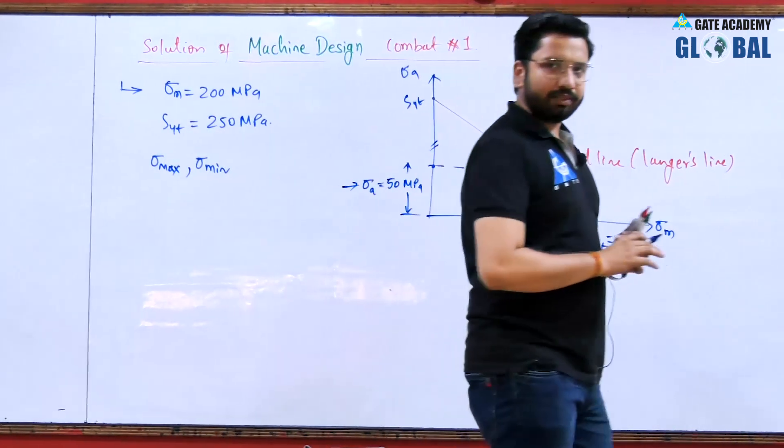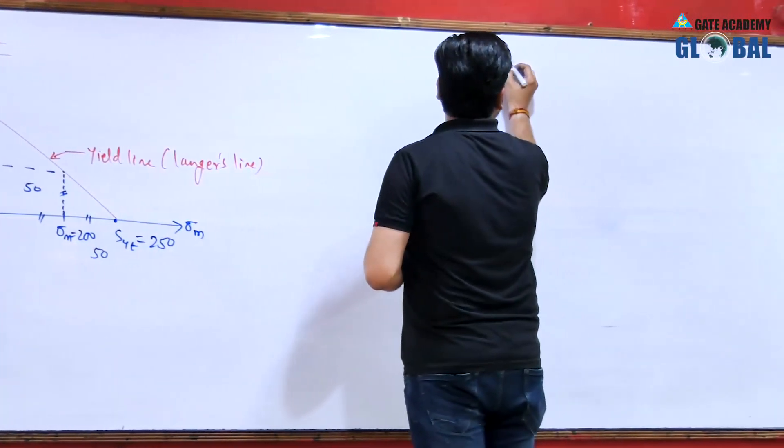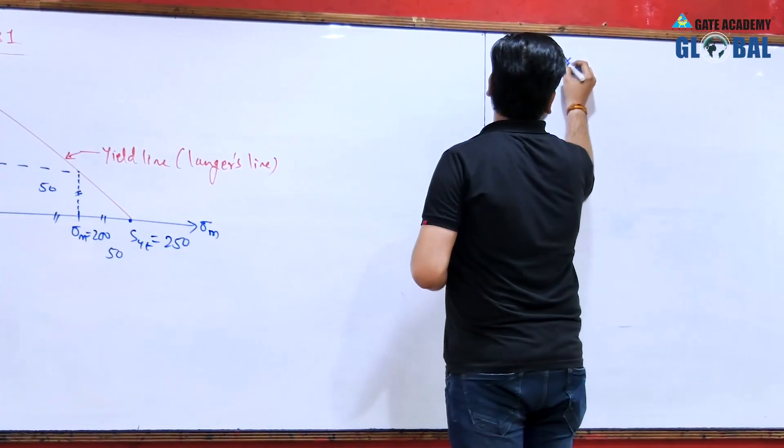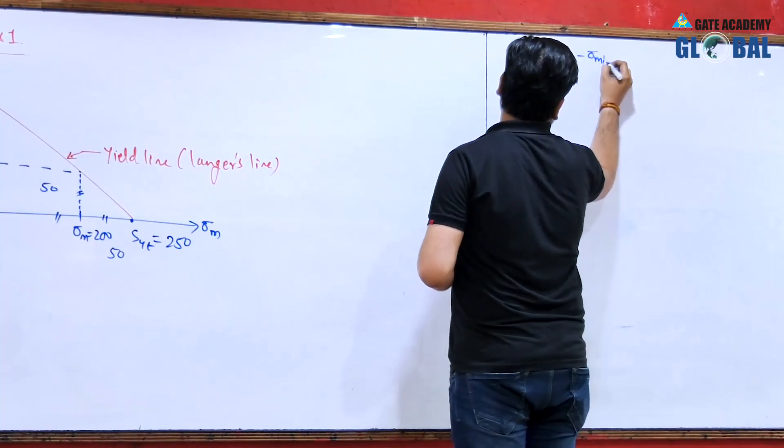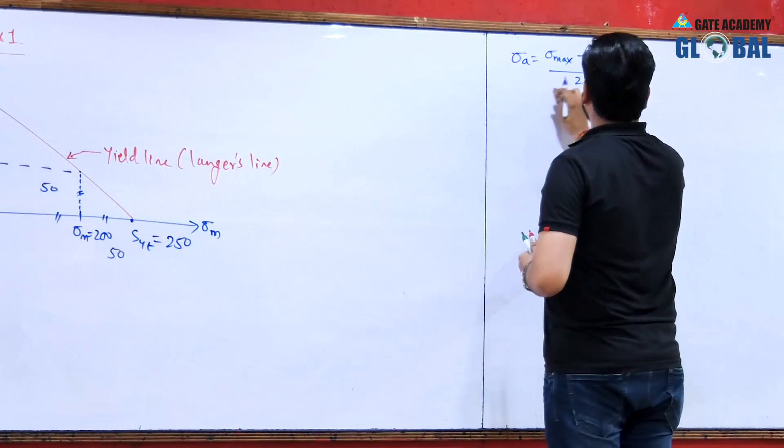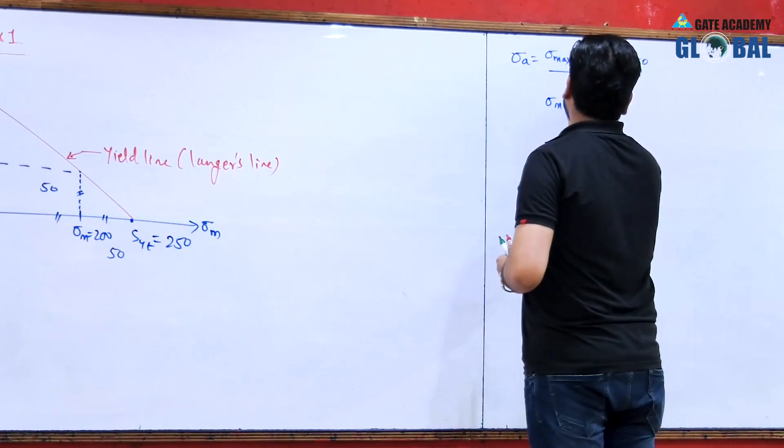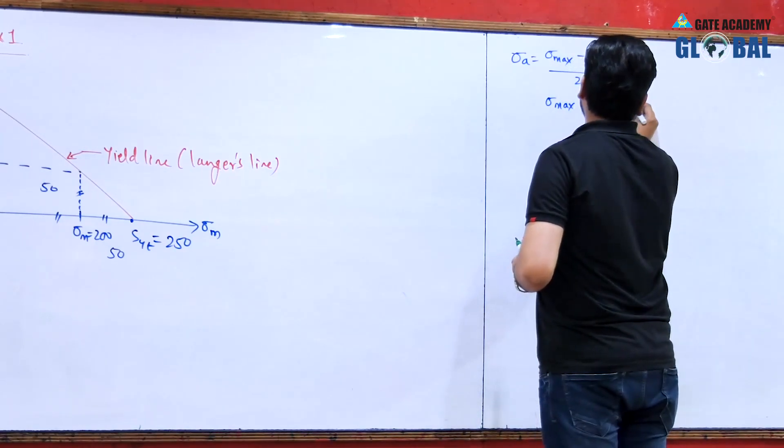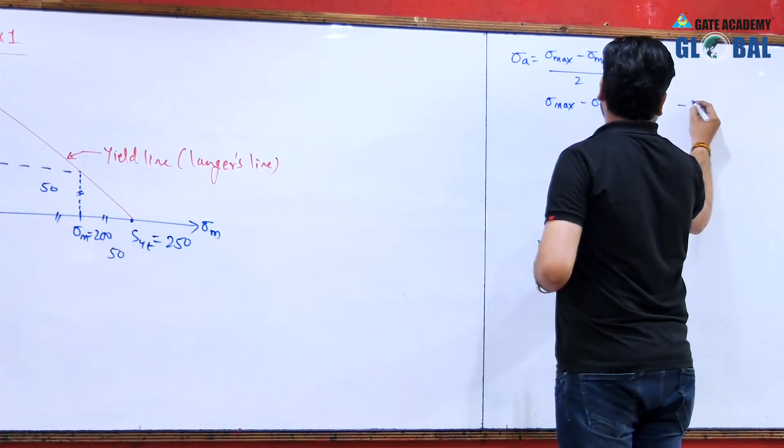As we know sigma a is equal to sigma max minus sigma minimum divided by 2. This will be equal to sigma a, that is 50. So this will be sigma max minus sigma minimum is equal to 100. Let us say it is equation number 1.